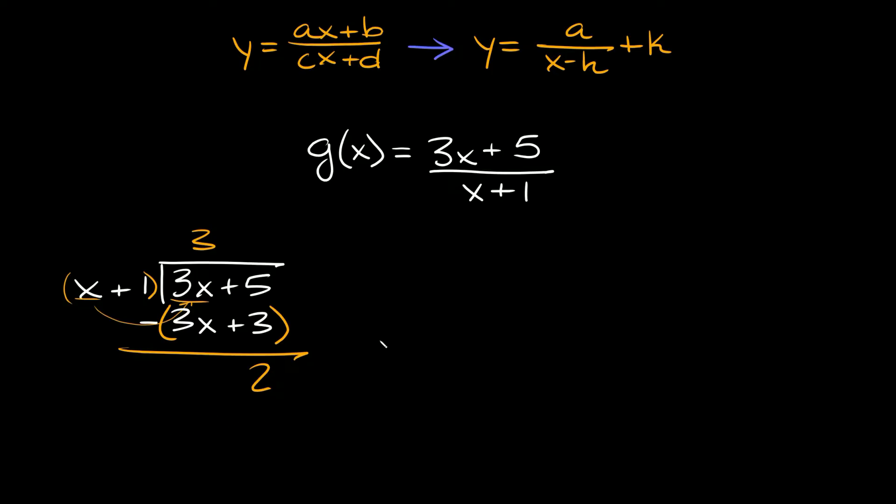So now we can construct our answer. So first we're going to put the number on top over here so it's going to be 3 and then we're going to add our remainder. So our remainder was 2 and that's going to go over these terms out here the divisor which is x plus 1.